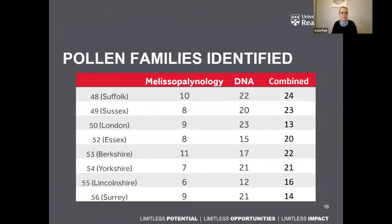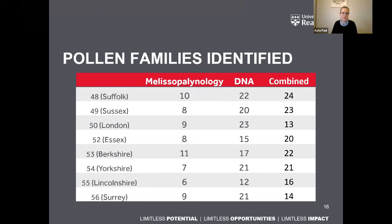Looking at how many pollen families were identified in numbers: the Melissopalynology — traditional counting through the microscope — and DNA analysis each identified different numbers of families, with some overlap in the combined count. There are still some families identified by DNA but not by Melissopalynology and vice versa. It's important to keep this in mind when looking at other data — how we might combine this in future development of identifying where a honey sample has come from in the UK and which method to use.